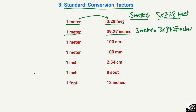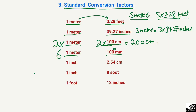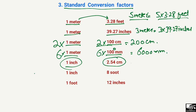Similarly, 1 meter equals 100 centimeters — so 2 meters equals 200 centimeters. And 1 meter equals 1000 millimeters — so 6 meters equals 6000 millimeters. You can just multiply both sides by the value you want to convert. For 1 inch, we have 2.54 centimeters or 25.4 millimeters, and 1 foot equals 12 inches.